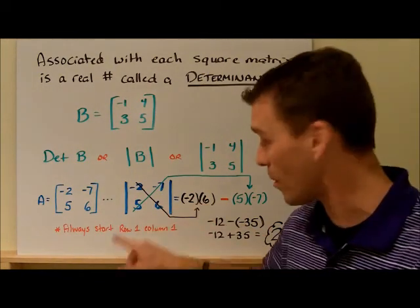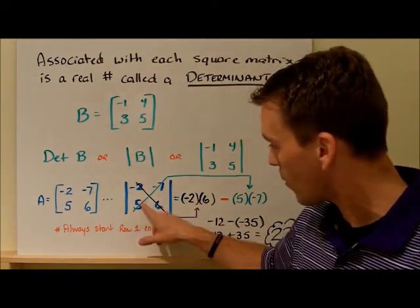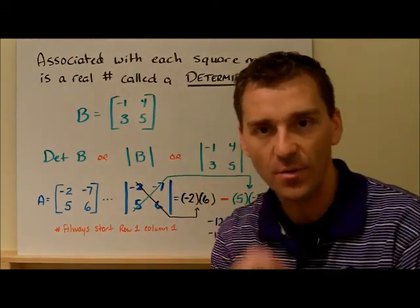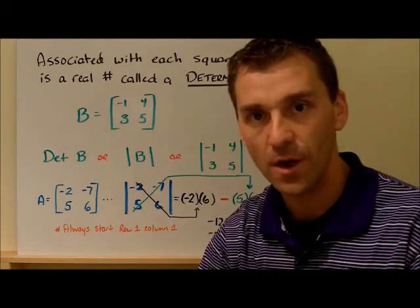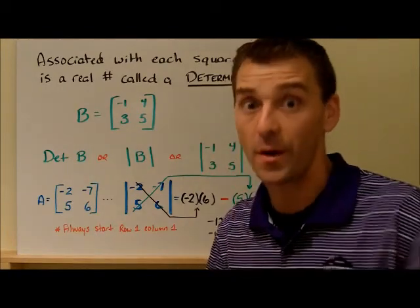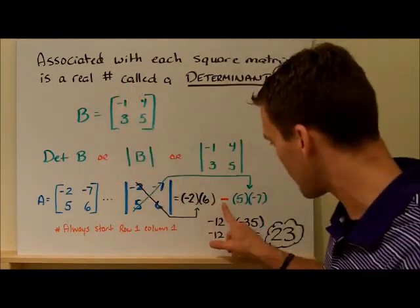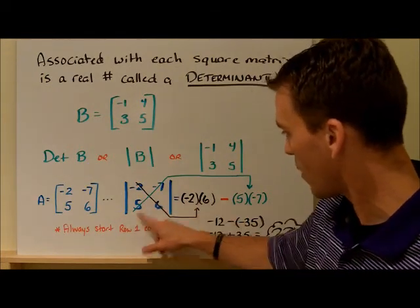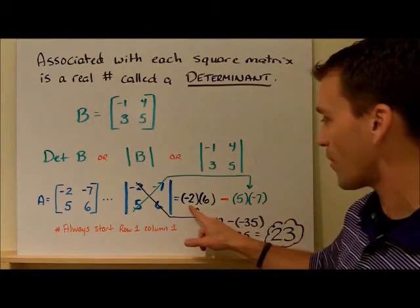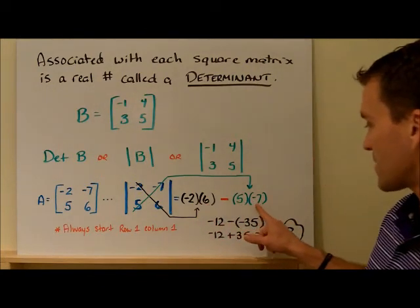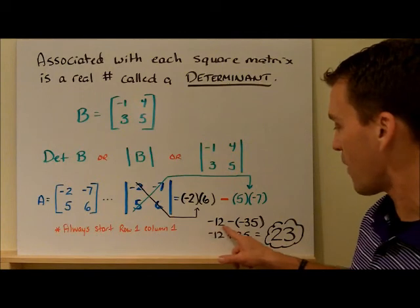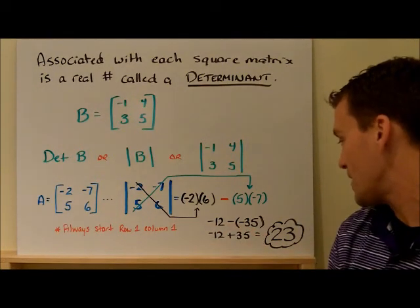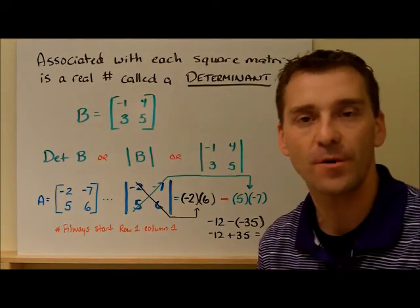And then we go uphill. We start down at the bottom and we go uphill and multiply those guys: five times negative seven. Remember the key thing is always this — when we go downhill, there is a difference from going uphill. So when you multiply negative two and six, it's negative twelve. Five and negative seven is negative thirty-five. Negative twelve minus negative thirty-five — change it to a plus — so twenty-three is your final answer for the determinant.